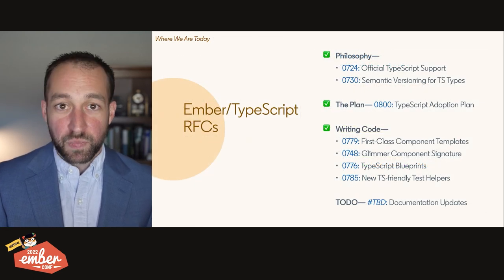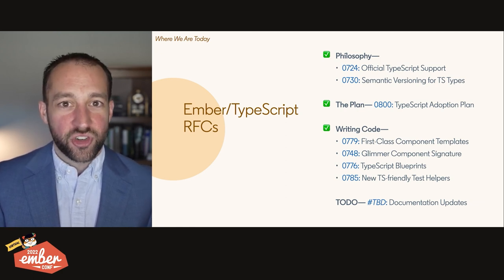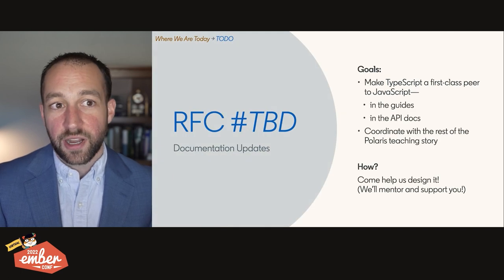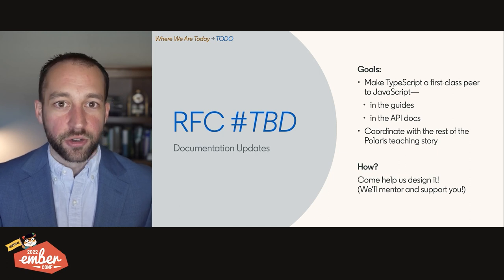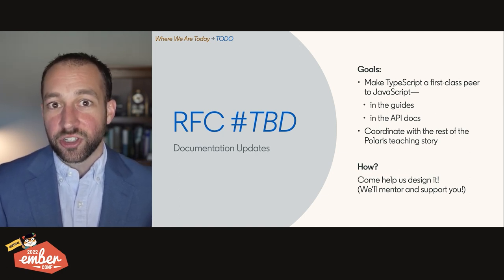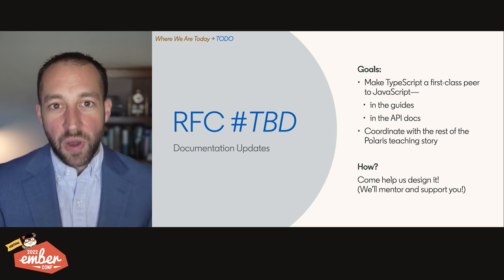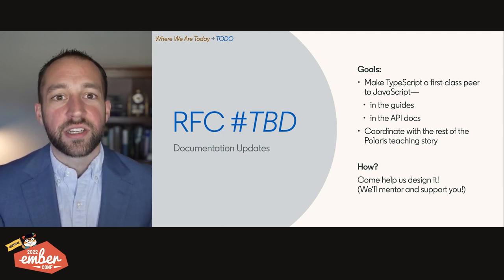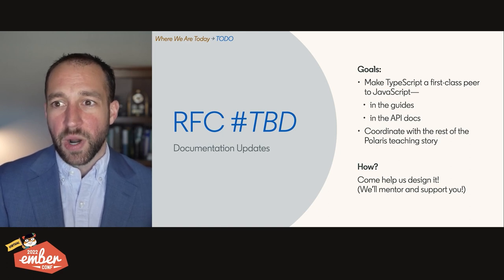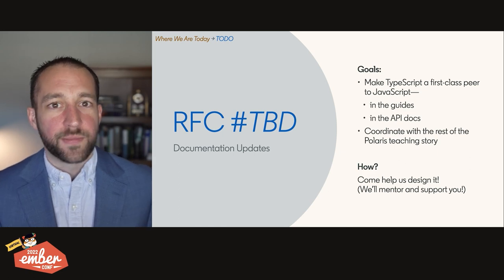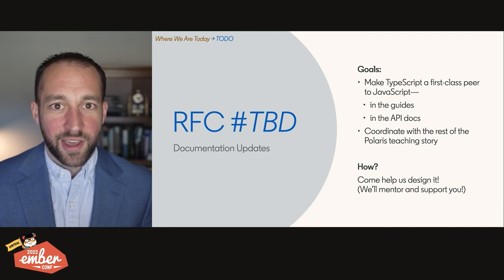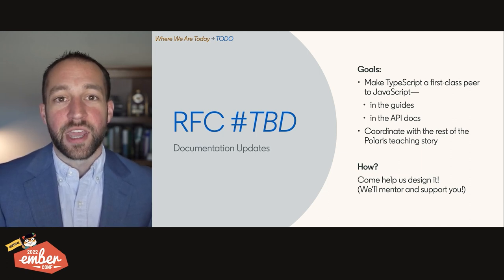So that's our updates to code authoring — a pretty good set of things. As I've said throughout, all of those benefit JavaScript users too, which is one of the reasons I'm so excited about how we've been approaching this process. The last part of our story is a documentation update, and this one is far-reaching because our goal was to make TypeScript a first-class peer to JavaScript — and that means it needs to be true in our guides and API docs too. We also need to coordinate this with the rest of our Polaris teaching story. This includes being able to toggle between TypeScript and JavaScript, different prose in those places, and API docs that know what to do with generic types for a JavaScript user. There's a lot to figure out and design to be done — so come work on it with us.